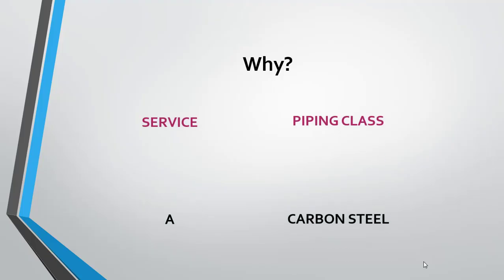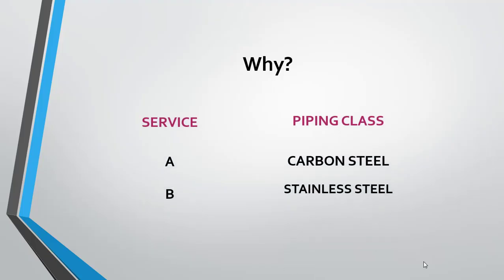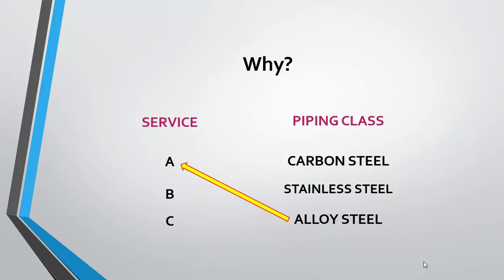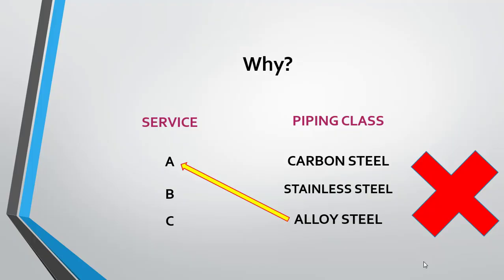Unauthenticated use of a piping class in other services would cause severe damage to human lives and plant infrastructure. For example, Service A has been allocated a carbon steel piping class, Service B a stainless steel piping class, and Service C an alloy steel piping class. If we use the piping class of Service C for Service A, it leads to a situation where the material is not compatible with the fluid passing through the piping. This may cause a severe accident — in most cases disastrous — which can take human lives and damage infrastructure. This is one of the reasons why PMS is always given utmost priority in the process industry and is solely controlled by piping material experts.